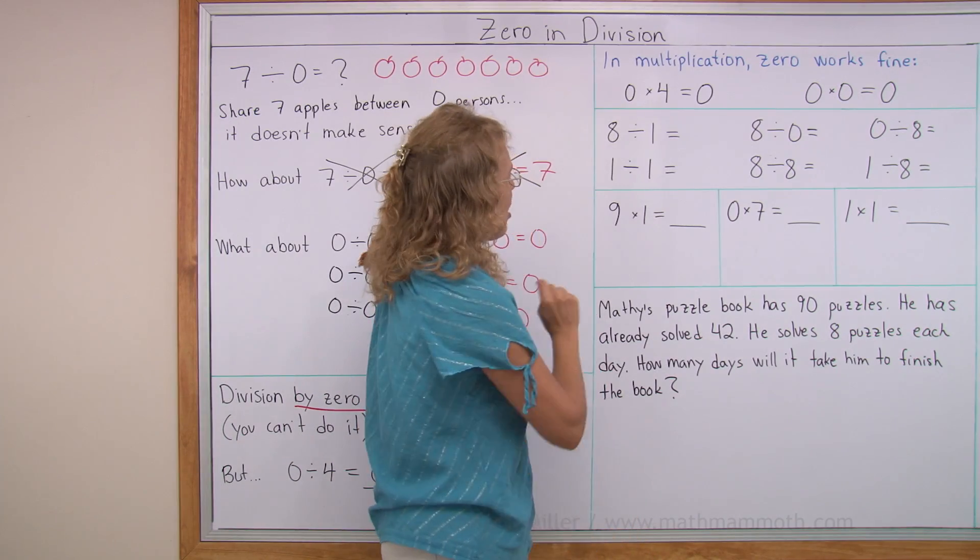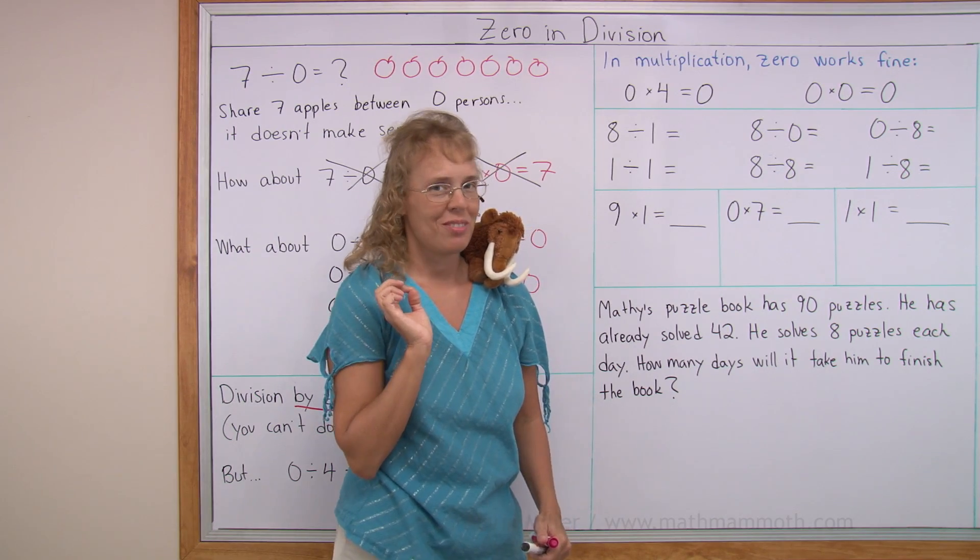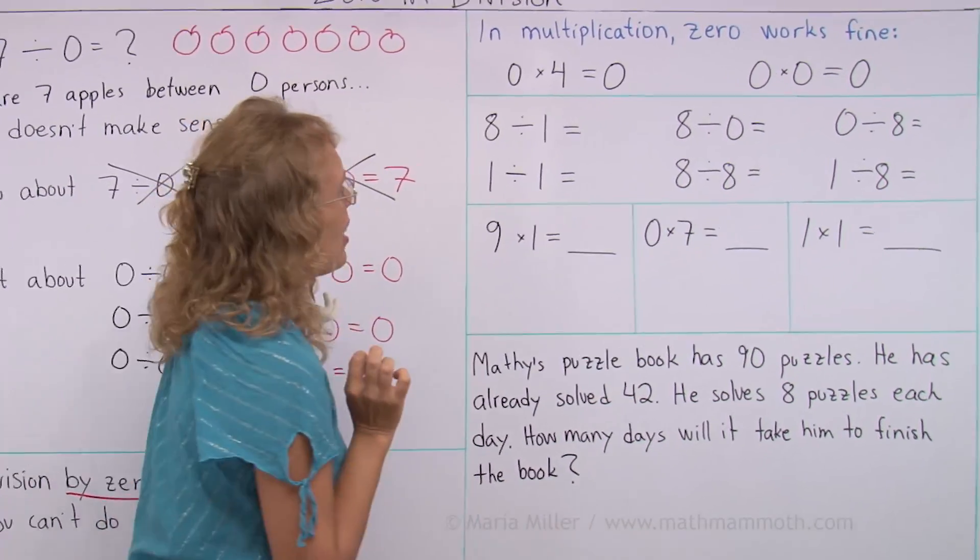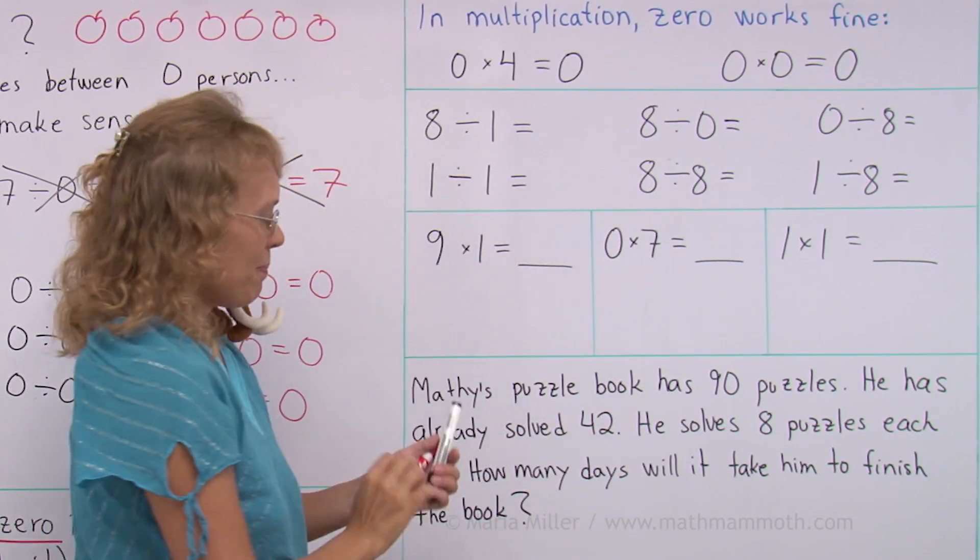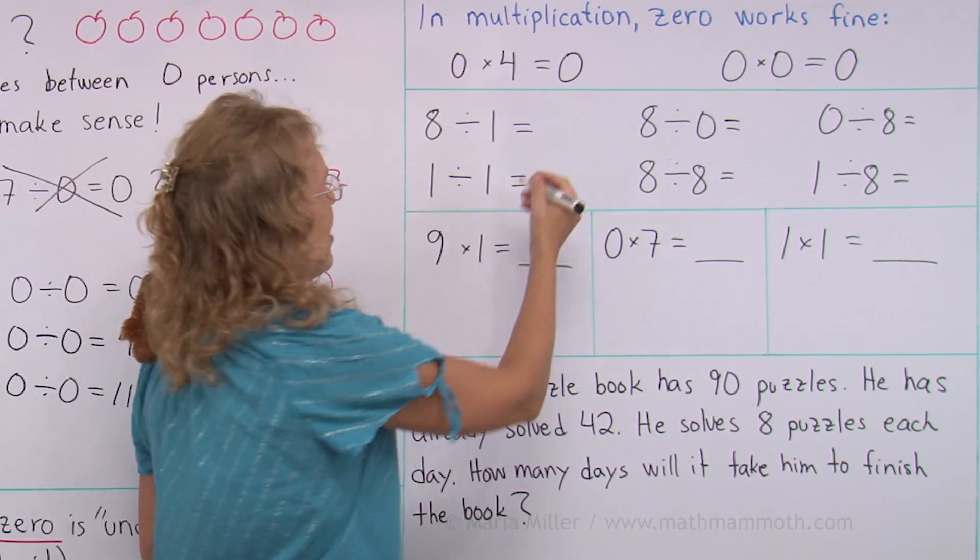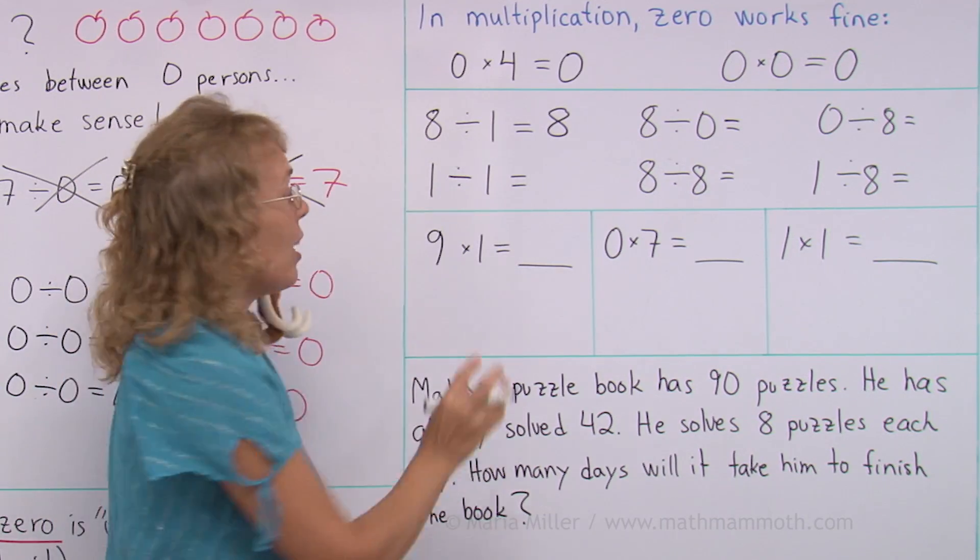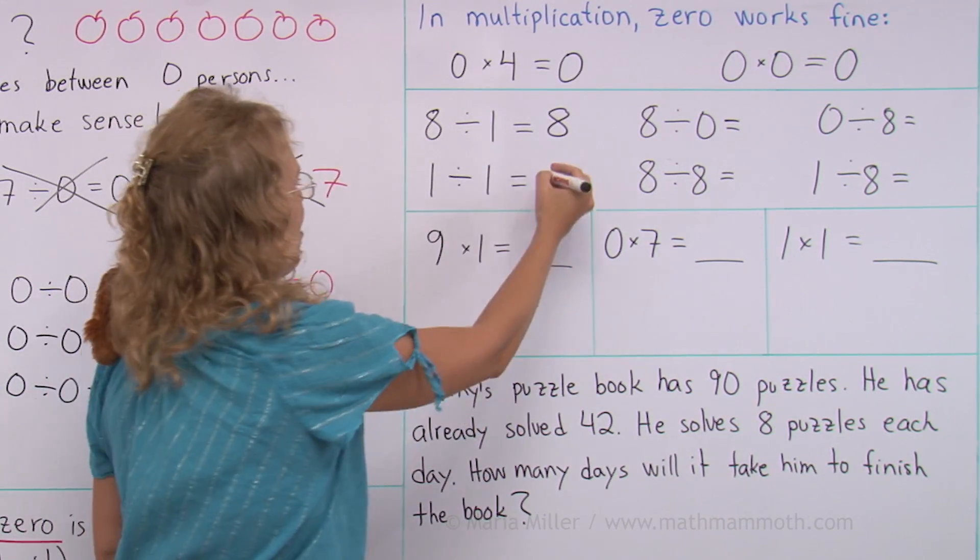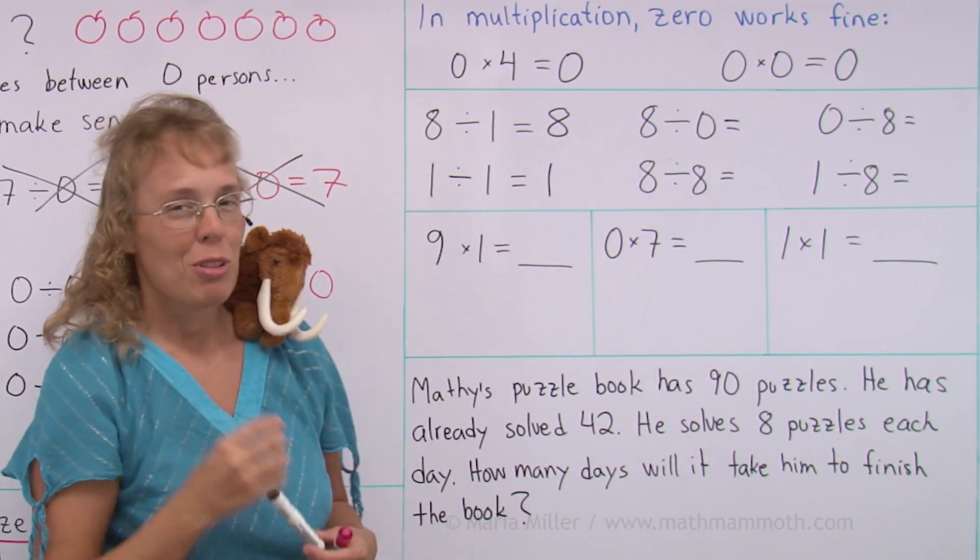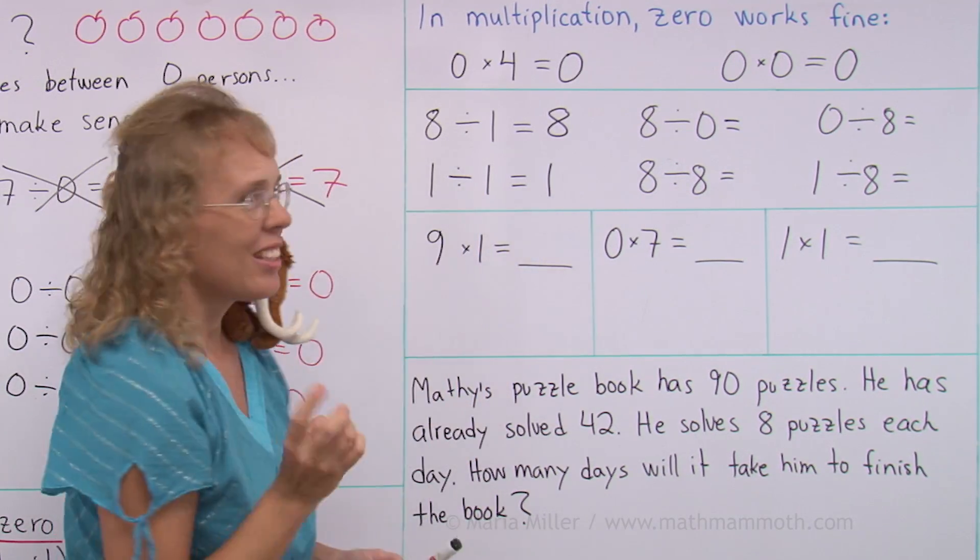Now, let's solve some division problems. Some of these we cannot do. Eight divided by one. Think, how many ones are in eight? That's eight. One divided by one. How many ones are in one? Well, just one. And remember, you can always check this by multiplying. One times one equals one. Everything is fine.